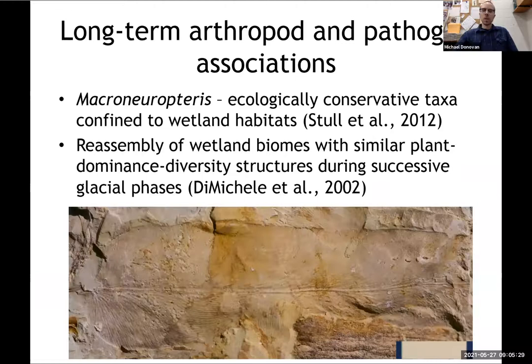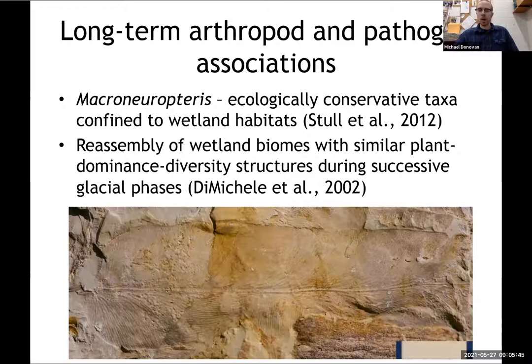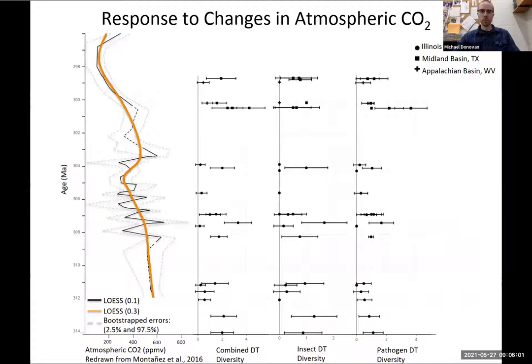This suggests long-term associations with arthropods and pathogens. Macroneuropterus is a really ecologically conservative taxon found in wetland habitats throughout its history. During these glacial-interglacial phases, there is a reassembly of wetland biomes with similar plant dominance and diversity structures during successive glacial phases. This ecological conservatism may have allowed long-term relationships with these arthropods and pathogens to persist.